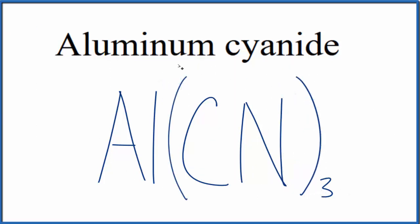And that makes this the formula for aluminum cyanide, Al(CN)3. And we have 3 separate cyanide ions here.